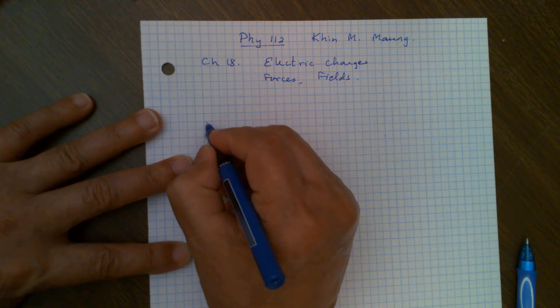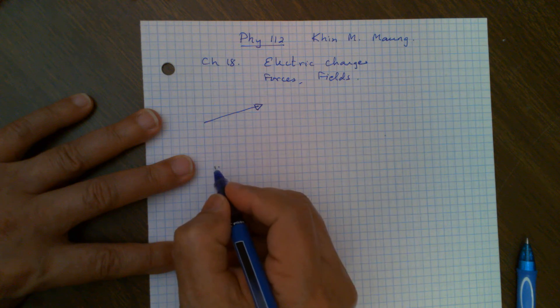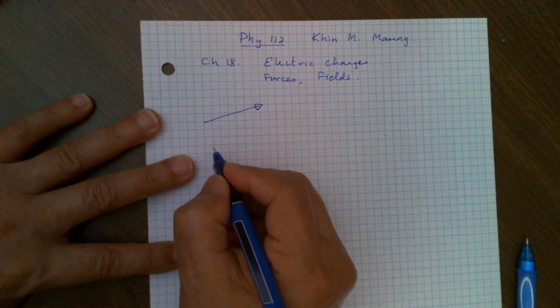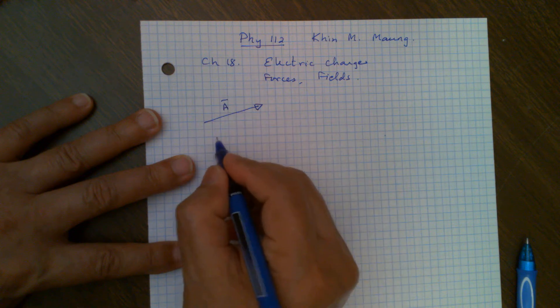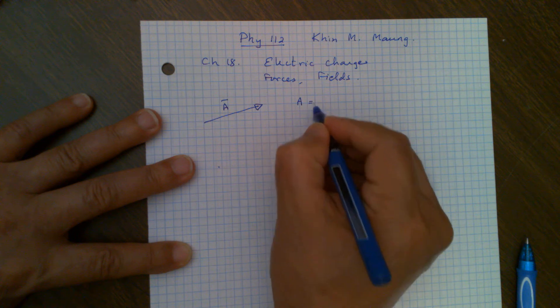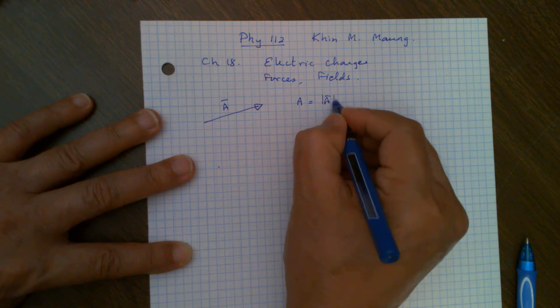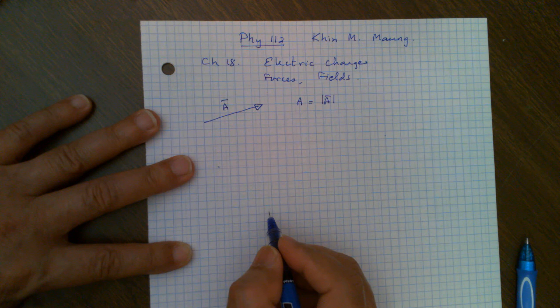So we will represent vectors by arrows. The length of the arrow will represent the magnitude of this vector. And the arrow head will show you the direction of this vector. So let's suppose this vector A, then the magnitude is given by this vector. We will write it as A without the bar, or sometimes we will write like this. And the direction is given by the direction of the arrow head.